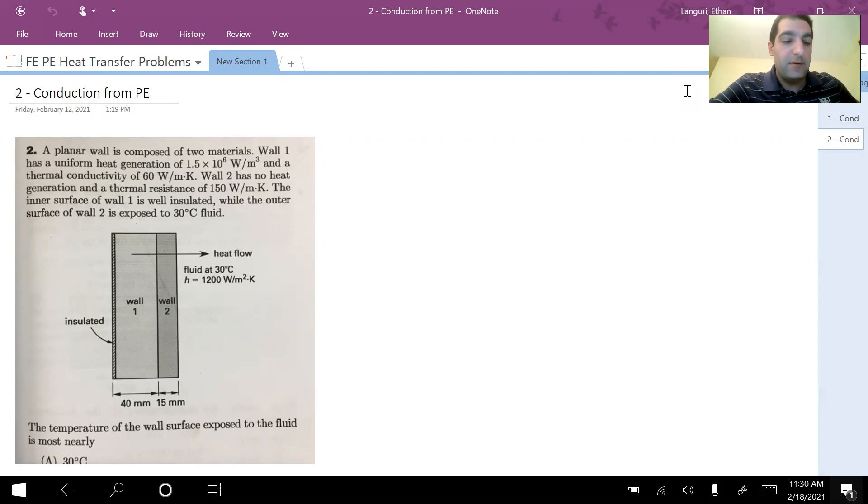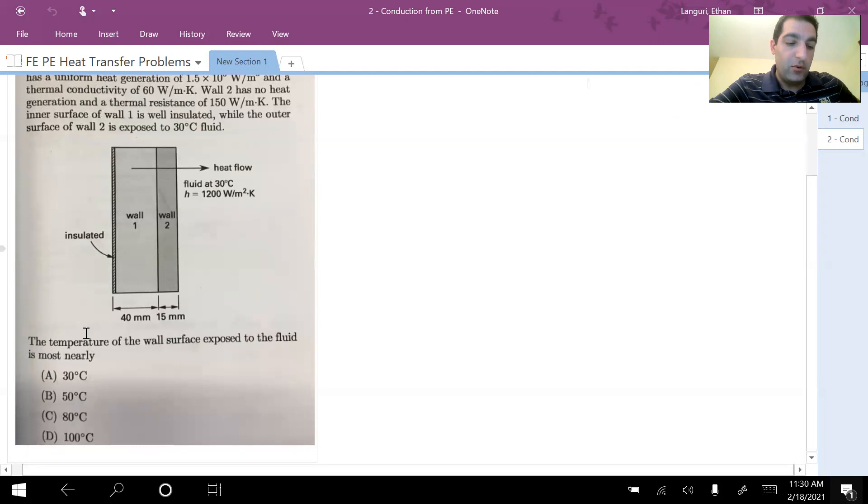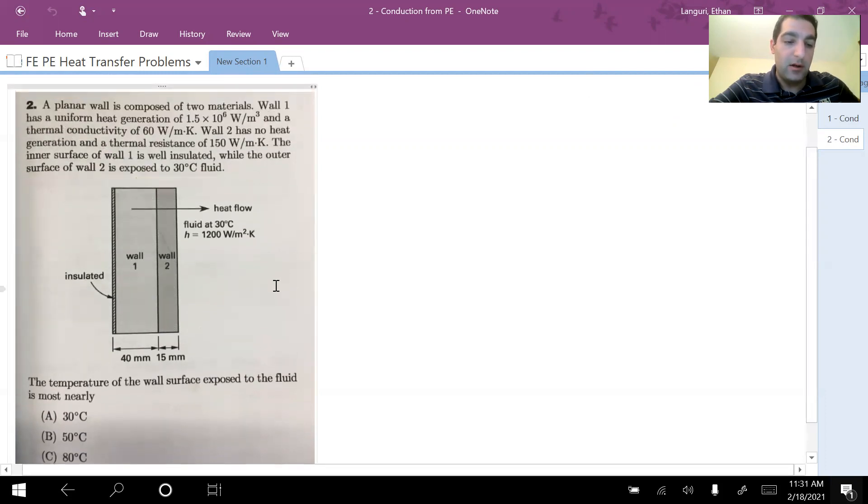The inner surface of wall one is well insulated, so adiabatic or insulated boundary condition. While the outer surface of wall two is exposed to 30 degrees C fluid, which in the picture you can see the heat transfer coefficient given to be 1200 watt per meter square Kelvin. Now the question is: the temperature of the wall surface exposed to the fluid is most nearly A, B, or C.